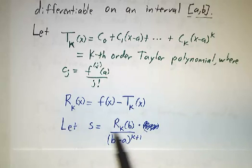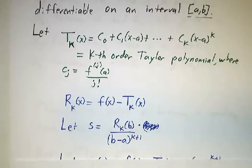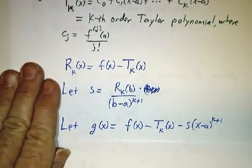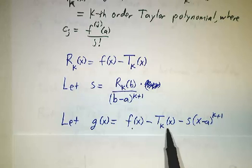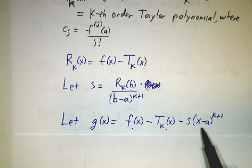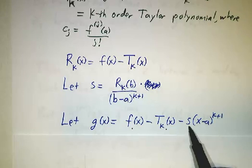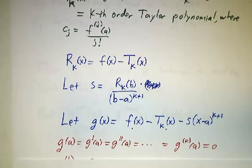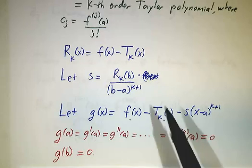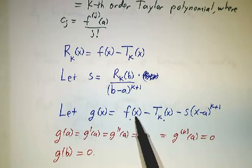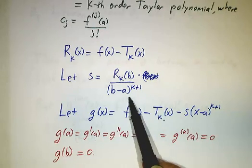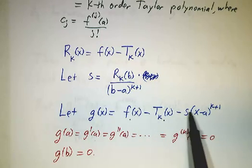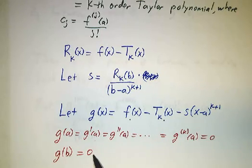And I'm going to define a new number, I'm going to call it s, is going to be the remainder at b divided by (b-a) to the k plus 1. And the purpose of that is that we can then define a new function g of x. It's going to be the original function minus the Taylor polynomial and minus this one extra term. We pick the value of s so that g of b is 0, because g of b is going to be f of b minus the Taylor polynomial of b, so this is R of b minus s times (b-a) to the k plus 1, which is Rk of b. So everything cancels and g of b is 0.